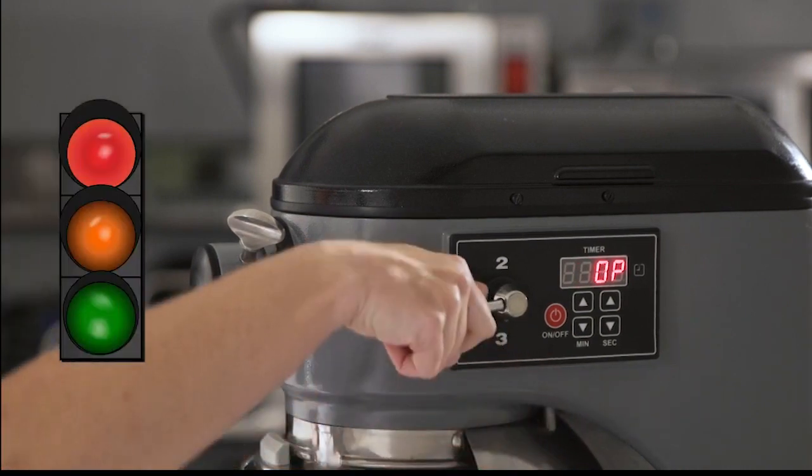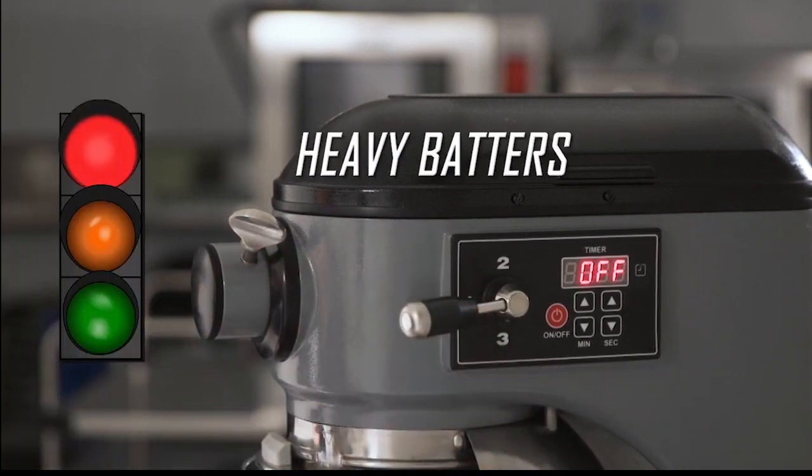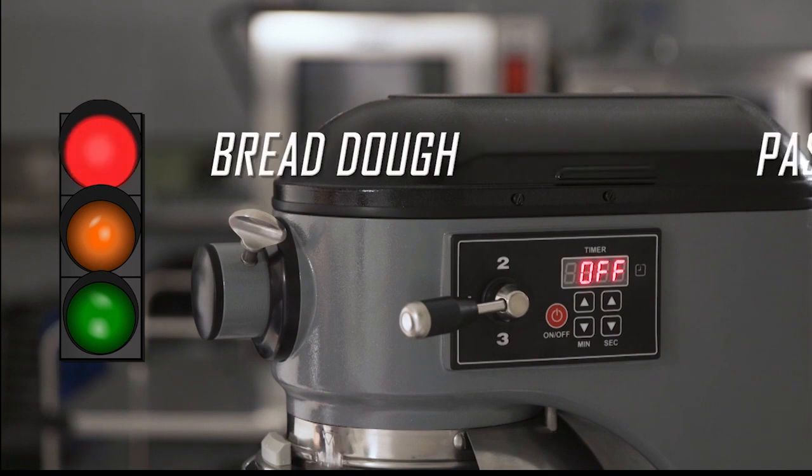Let's talk controls. Everyone wants a little control, and we've made it pretty simple. The mixer has three speeds. Shift into first for mixtures like heavy batters, mashed potatoes, pasta dough, and bread dough.